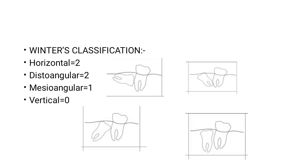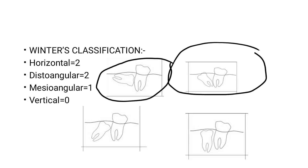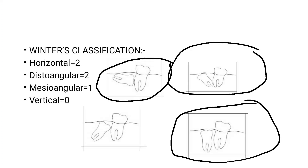In Winter's classification, you can see over these diagrams: horizontal impaction is hard to extract, so it is scored two. Disto-angular impaction is also hard to extract, so it is also scored two. Mesio-angular impaction is comparatively less hard to extract, so it is scored one. Vertical impaction is easily extracted — less force is applied — so it is scored zero.